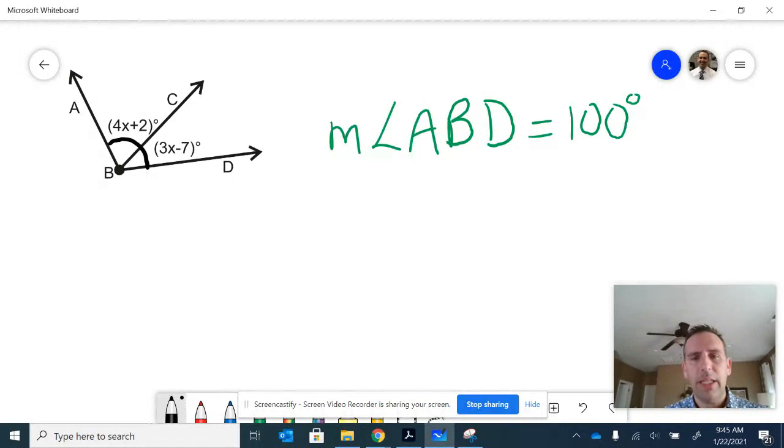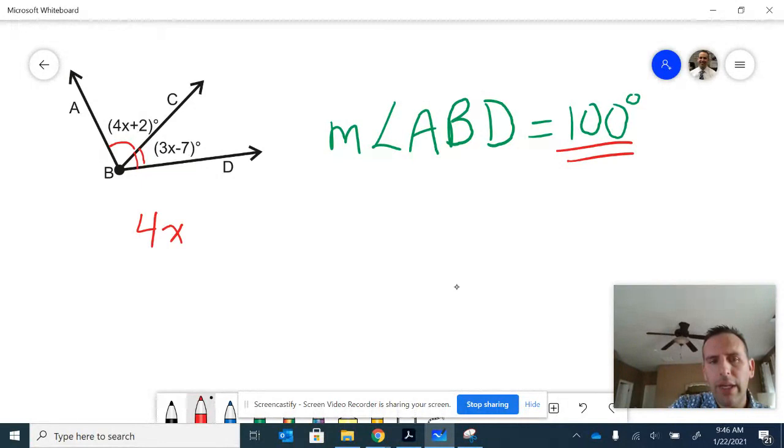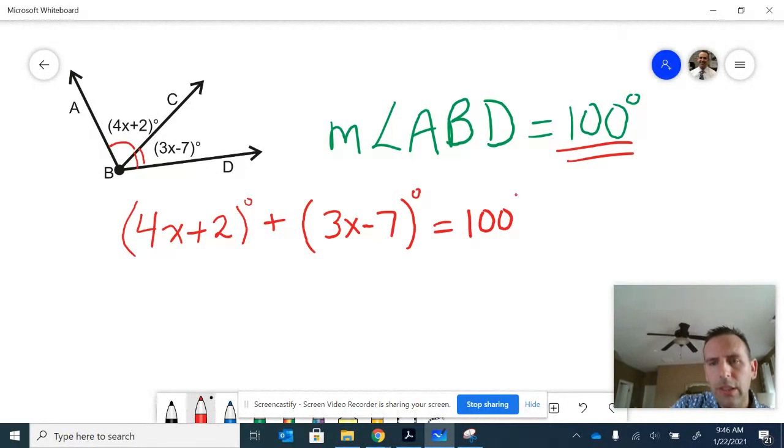Well, what would necessarily be true with the angle addition postulate is that this angle and this angle—they don't have to be equivalent, notice I'm giving them different markings—but they have to add up or have a sum of 100 degrees. So you could use some algebraic expressions to figure that out. The first angle, 4x plus 2 degrees, if you add in the second angle, 3x minus 7 degrees, you should be getting 100 degrees.